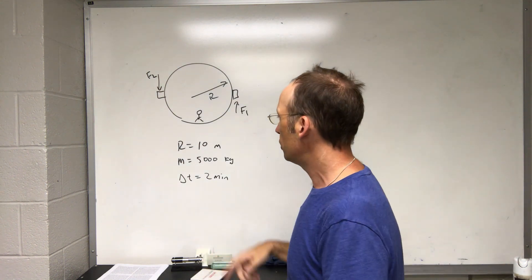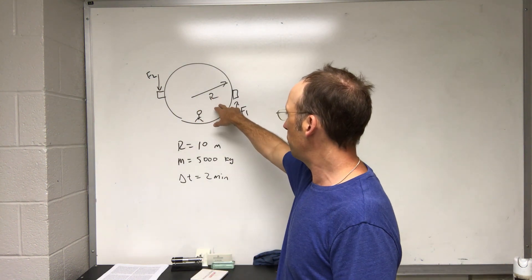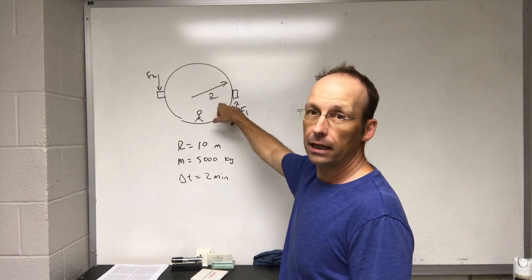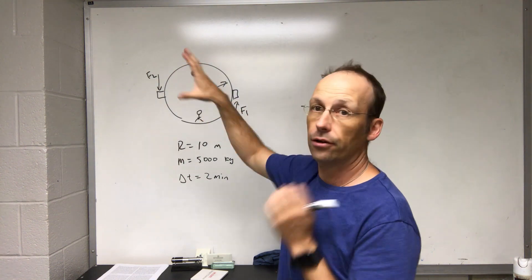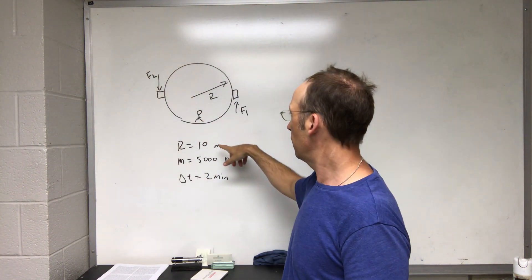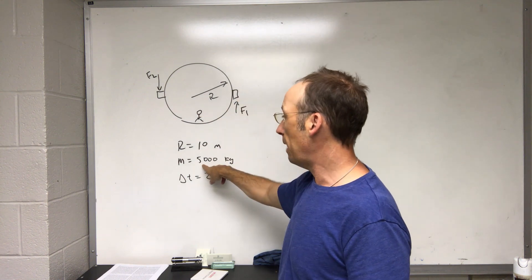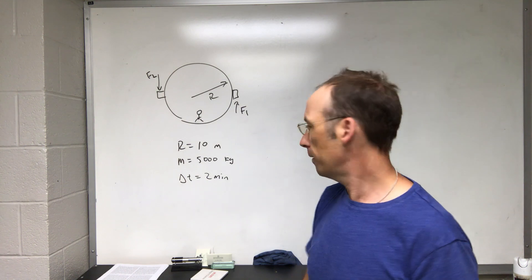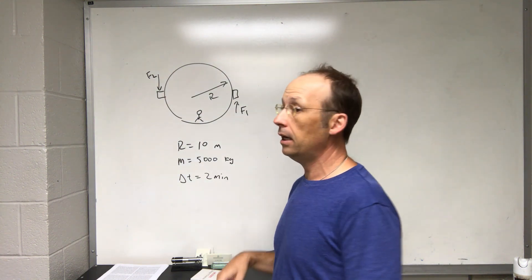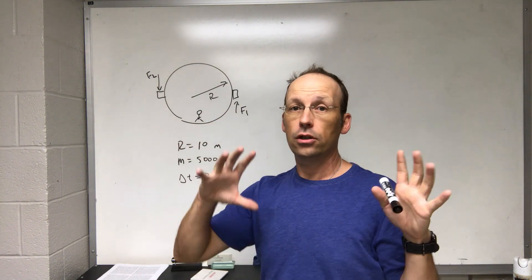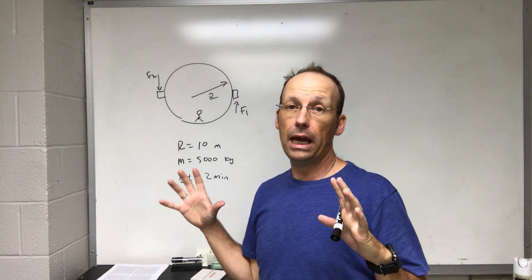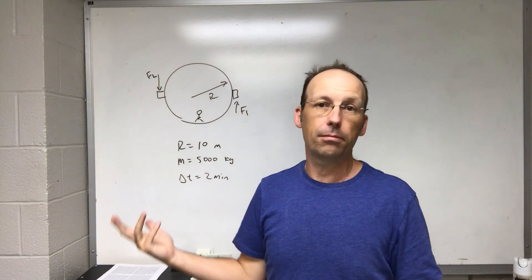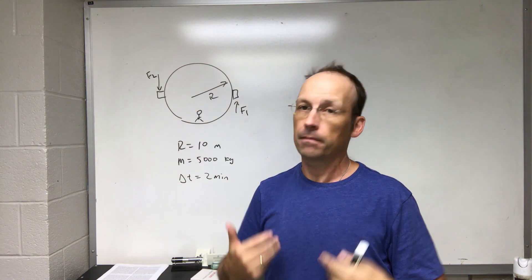So I made some size of the spaceship. It has a radius of 10 meters, it's a cylinder, and you stand on the inside and it rotates around. It has a mass of 5,000 kilograms, probably a little too low but I'm okay with it. And I want it to start from rest to half of a G weight in two minutes.